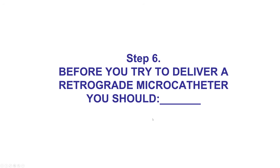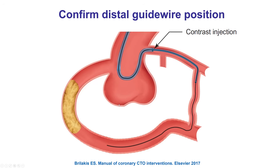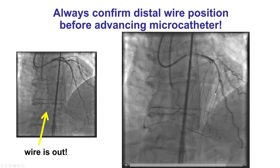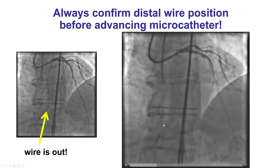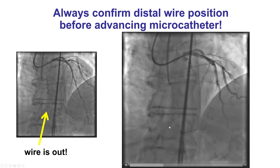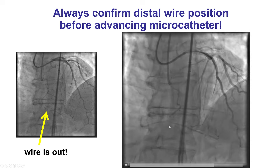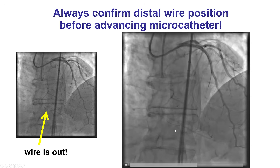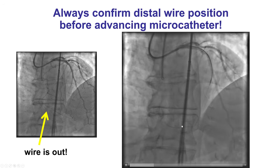It is very important, before doing anything in terms of delivering the retrograde microcatheter, to make sure that the wire has crossed from the collateral into the distal true lumen. Otherwise, this can result in perforation. This is an example where the wires seem to be in the true lumen; however, injection demonstrates that the wire is actually outside, possibly in a cavity or possibly into an epicardial vessel, and advancing the microcatheter when the wire is not where you think it is can lead to perforation.